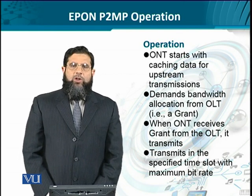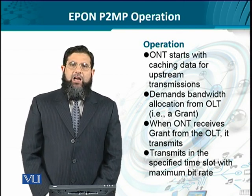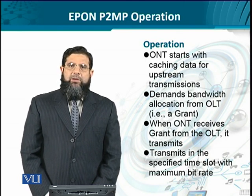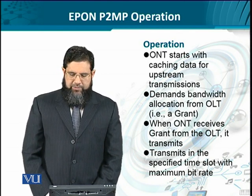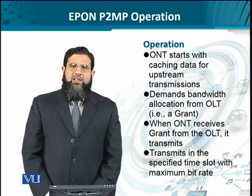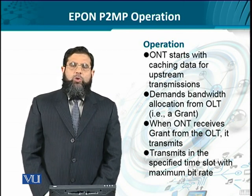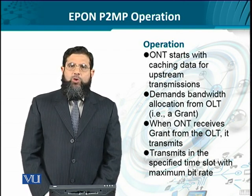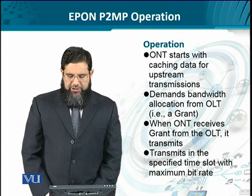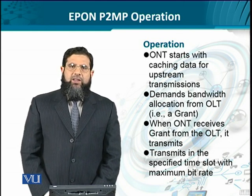When the operation starts, the ONT on the customer premises side first caches data for the upstream transmission and then makes a bandwidth allocation request. This allocation request is to get a grant message. So when the grant message is given to the ONT, it readily transmits. A little bit of caching delay is incorporated in the ONT-to-OLT upstream transmission. This transmission is only restricted to the time slot which is given in the grant message.